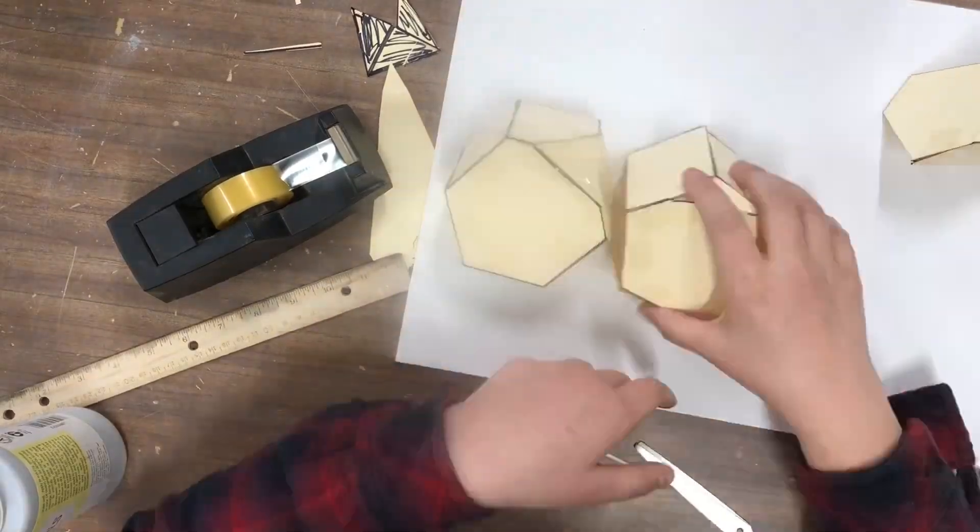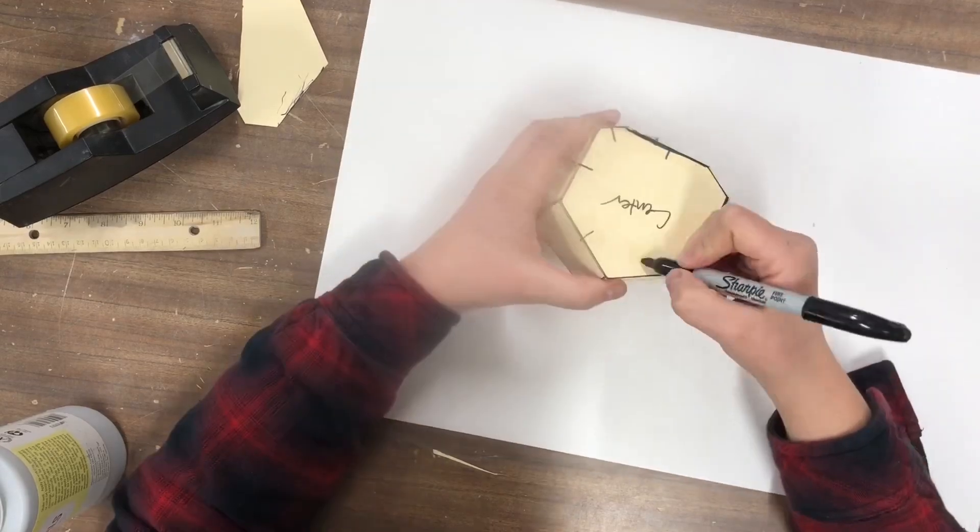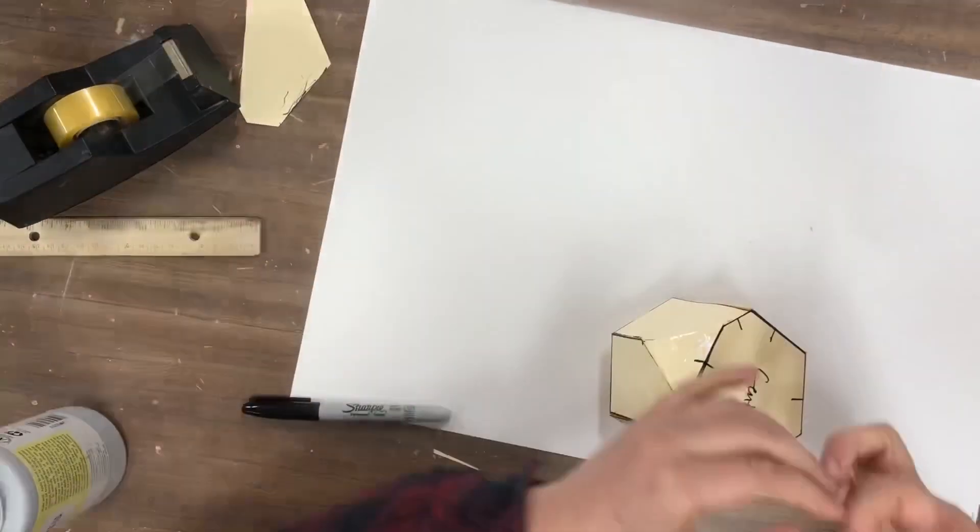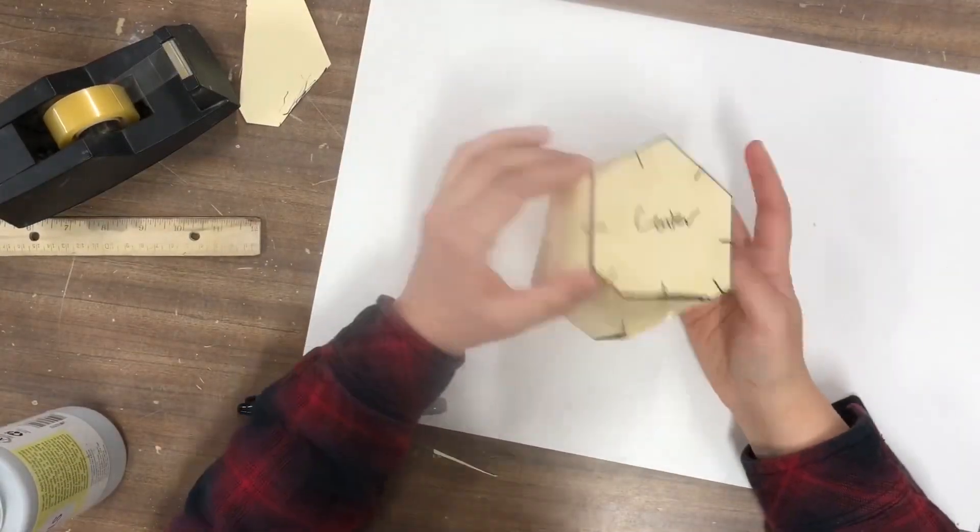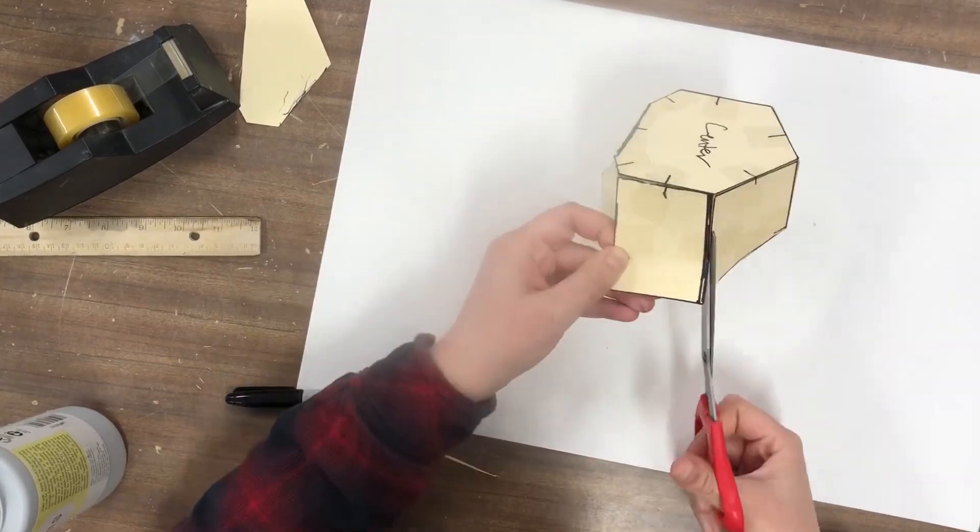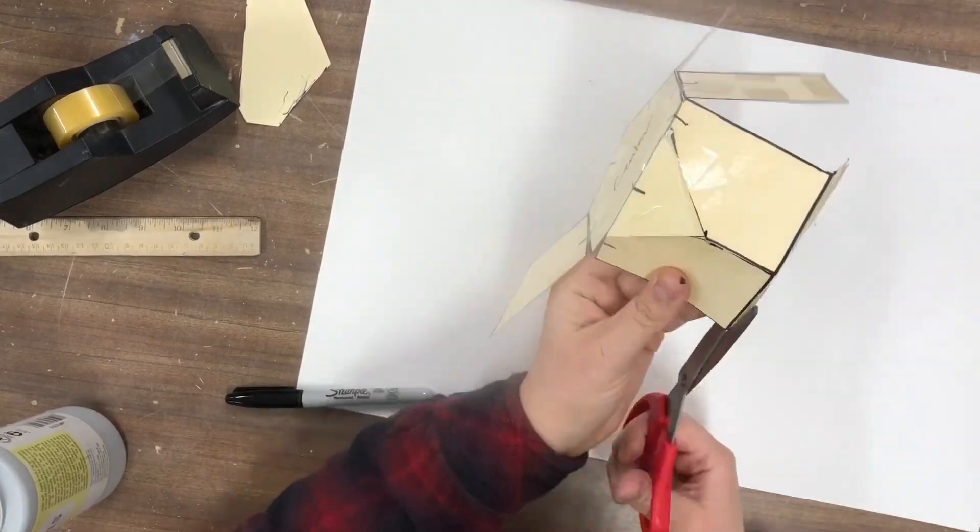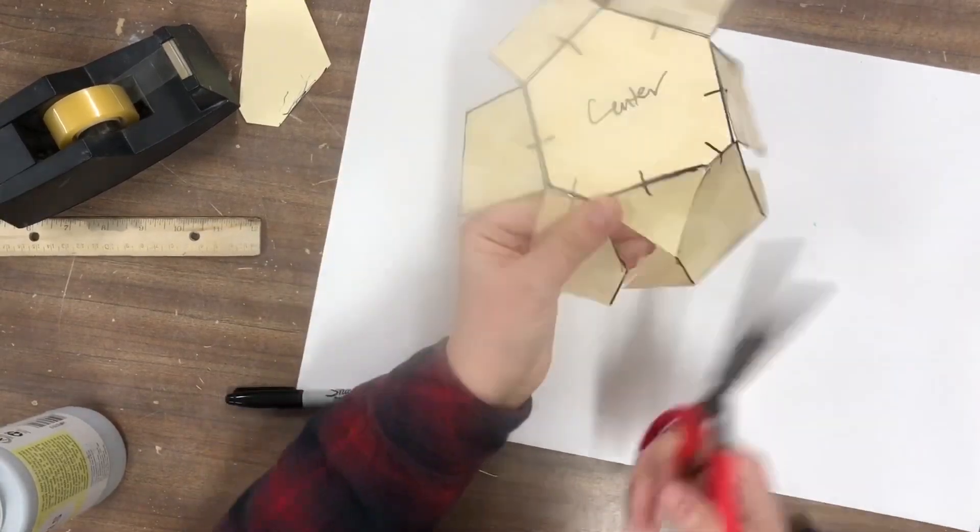Once you are done altering your form, it is now time to disassemble your form and create a new net. Mark one of the sides of your form as the center and create notches to the walls it's connected to. This will give you a guideline for how to flatten out your form. Wherever you see a notch connected to the central piece, you'll know not to cut away at that fold.